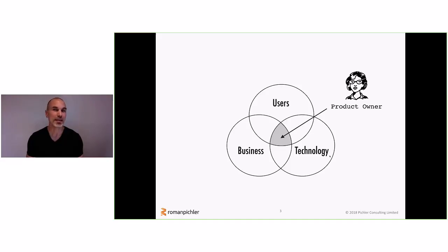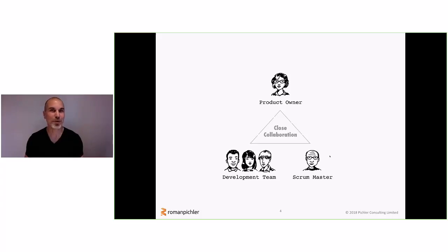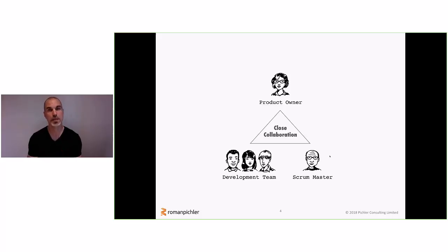The product owner role comes from Scrum — it emerged and is defined in Scrum. In Scrum, there's not only a product owner but also a development team — a multidisciplinary, cross-functional development team — and a Scrum master. All three roles should collaborate closely, as I'm sure you've heard many times before. But I think it's still important, despite all the close collaboration, to be clear on what the core responsibilities are and what kind of leadership each role exercises.